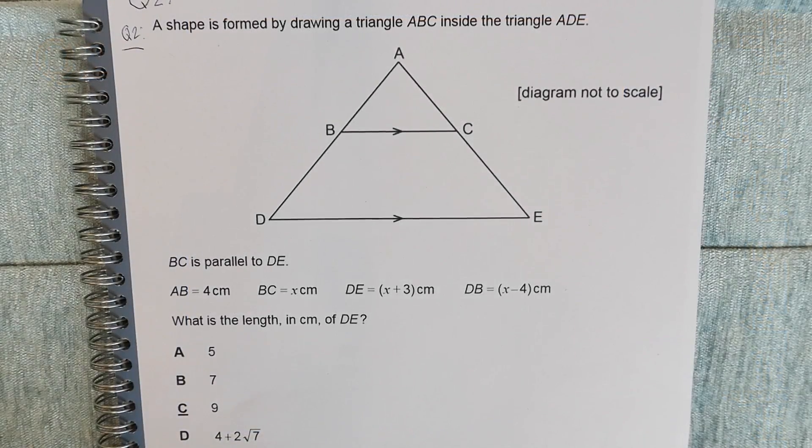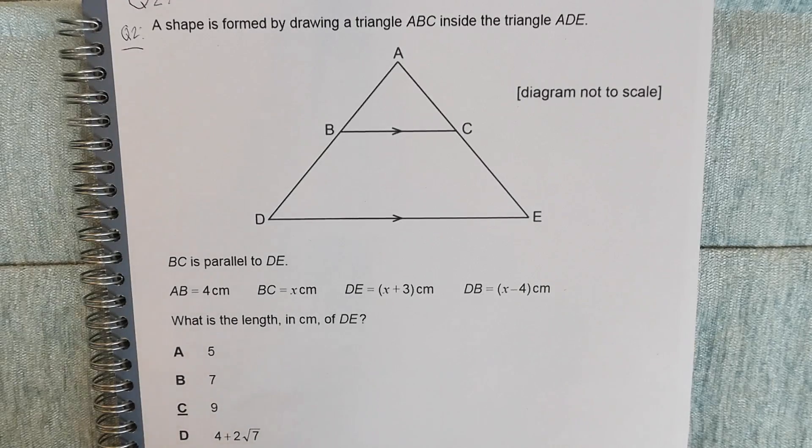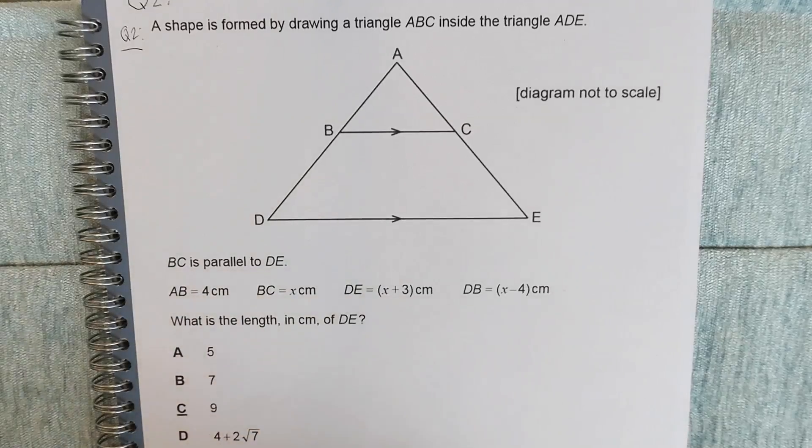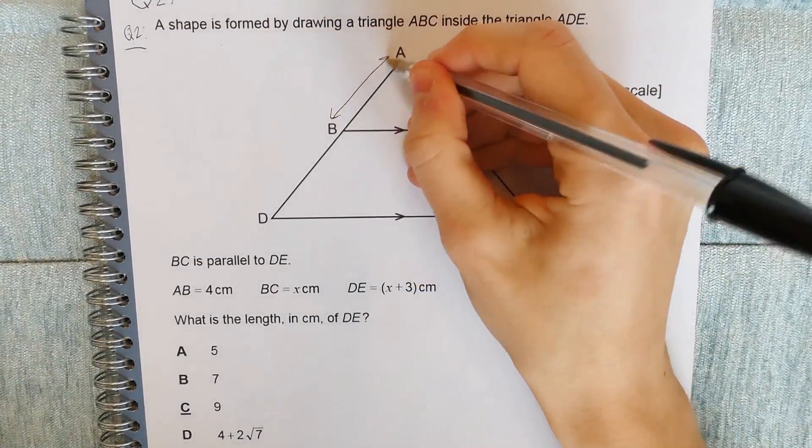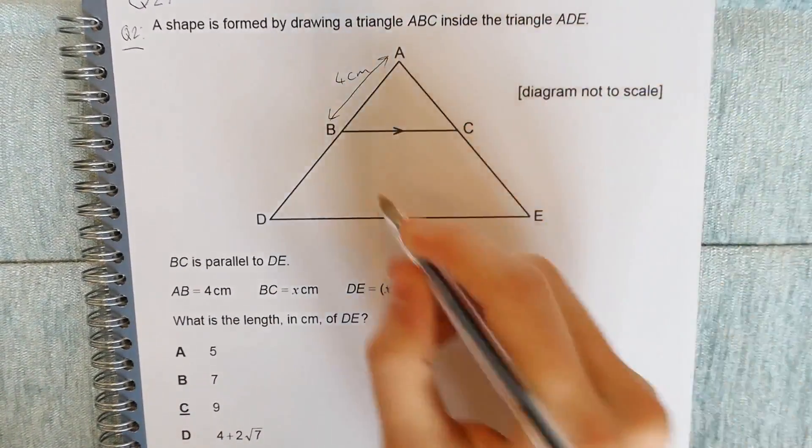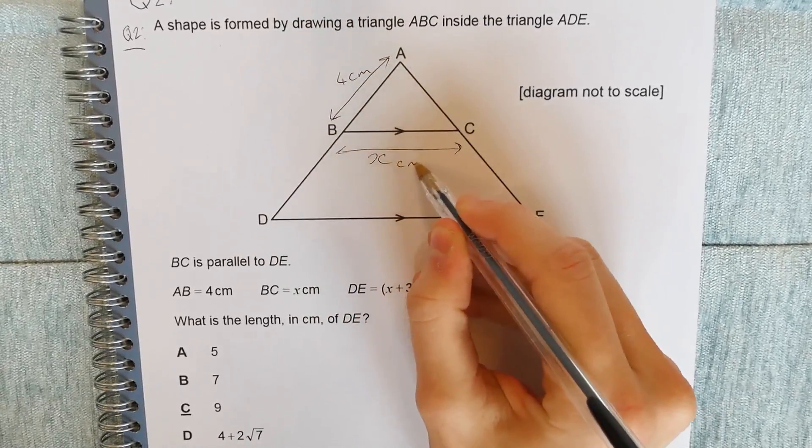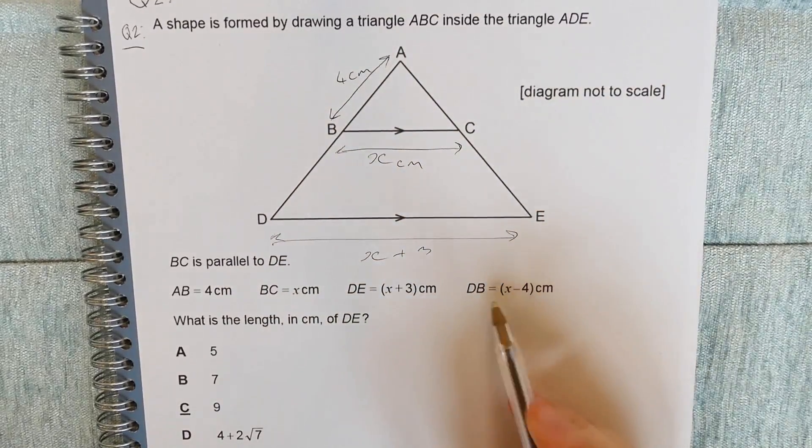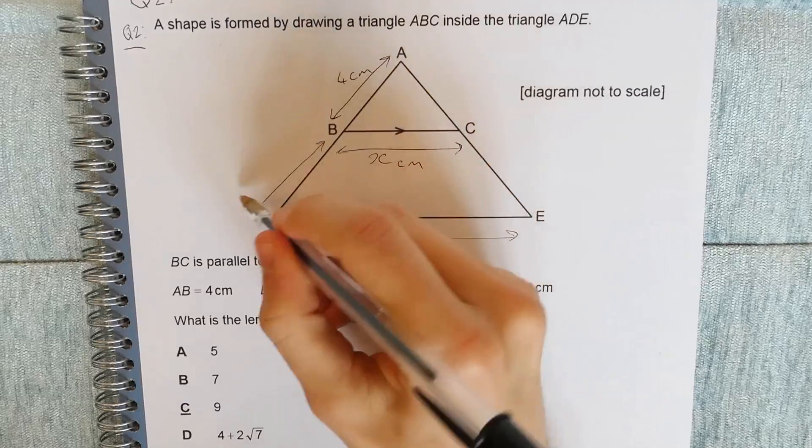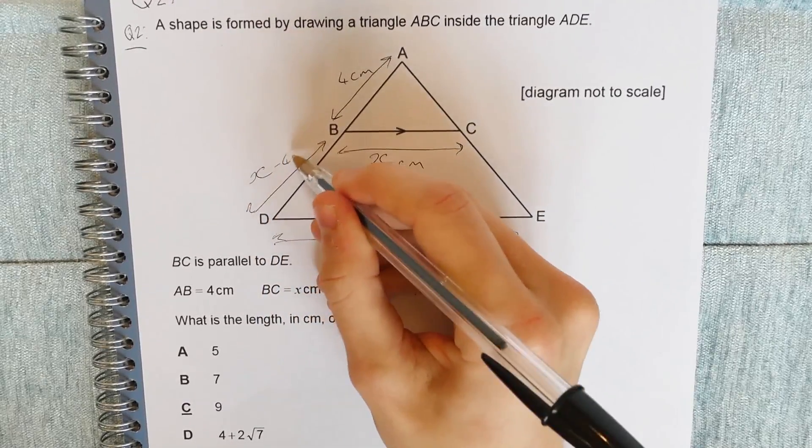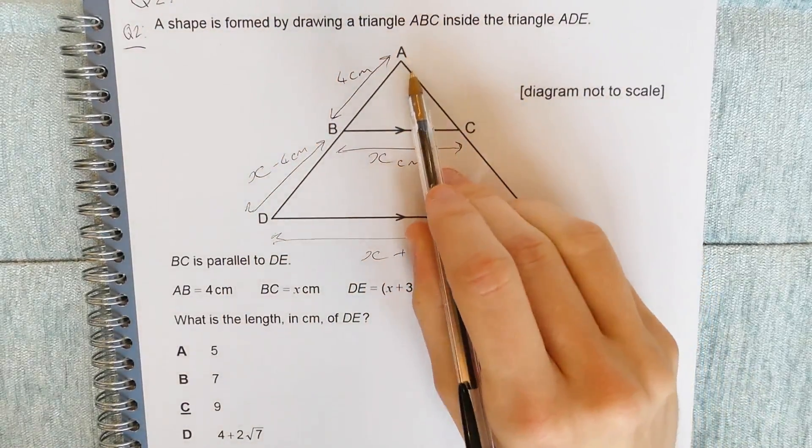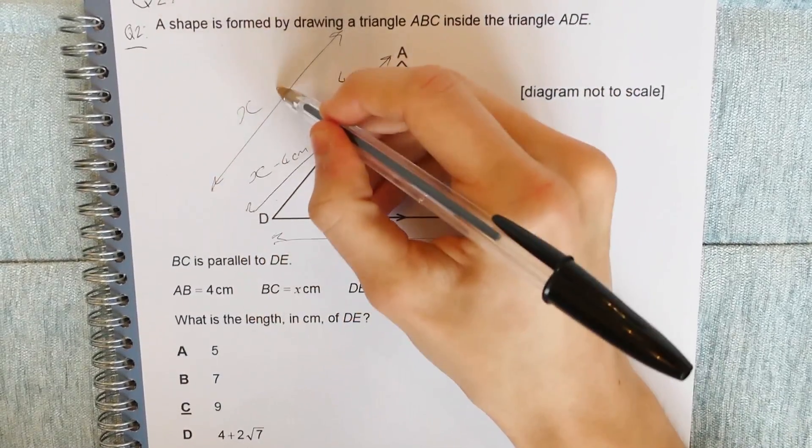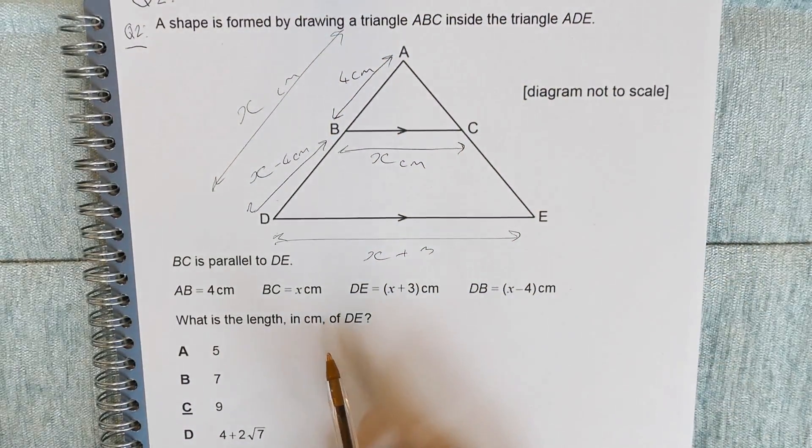Question 2. A shape is formed by drawing a triangle ABC inside of the triangle ADE. BC is parallel to DE, and then we're given some various side lengths. So AB is equal to 4 centimeters, BC is equal to x centimeters, DE is equal to x plus 3 centimeters, and DB is equal to x minus 4 centimeters. So also that means that this side AD, x minus 4 plus 4, is all equal to x centimeters. So what is the length in centimeters of DE?